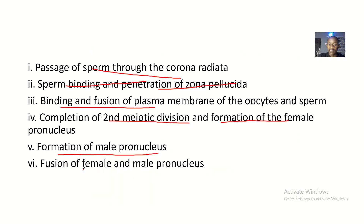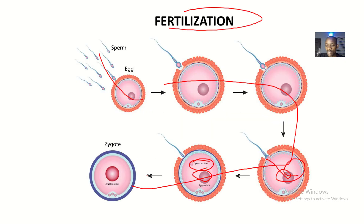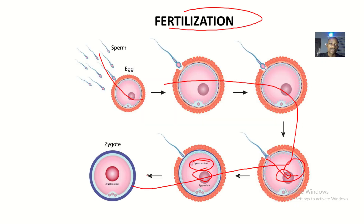Lastly, there is fusion of the female pronucleus and the male pronucleus. These pronuclei get large, come together, and fuse to form one zygote. The result is a zygote — a unicellular structure with a 2n chromosome complement.